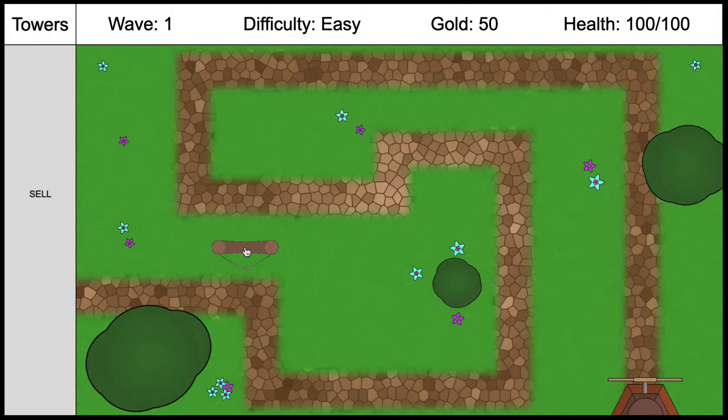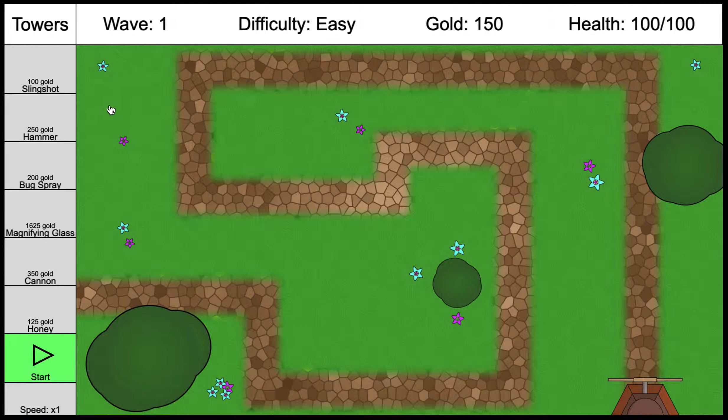We'll click slingshot, and as you can see, your slingshot is here. The price has gone down—sorry, the amount of gold you have has gone down to 50, because we've just spent 100 gold. Also the tower menu here has changed to a big sell button, so if I don't want to actually buy that tower and place it, I can just click here on sell, and it gives me my money back, and I can pick other towers if I want.